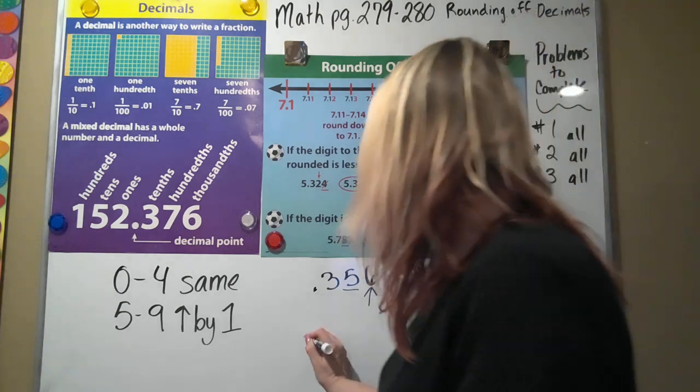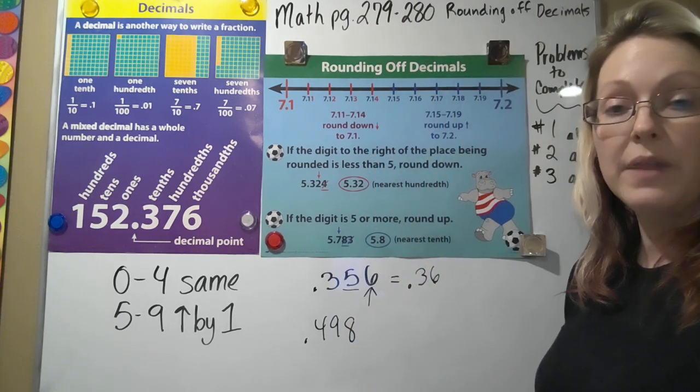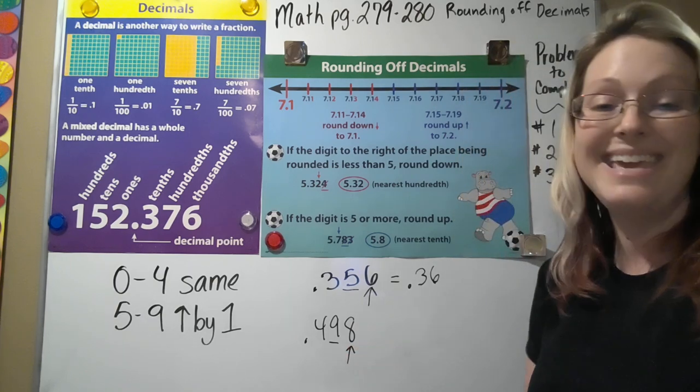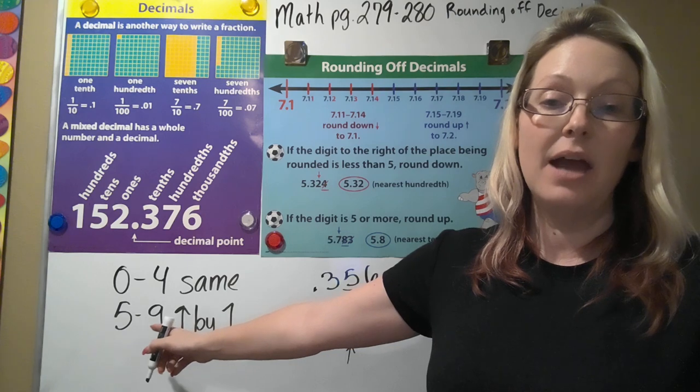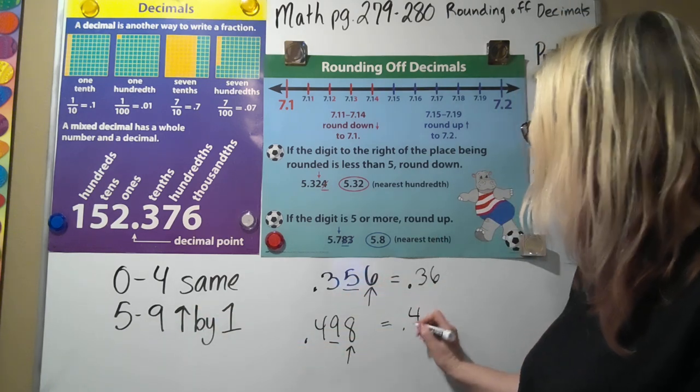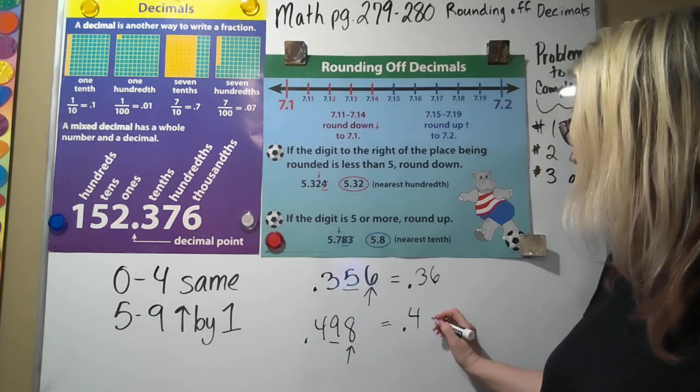Now let's try another one: 0.498, also round to the hundredths. Which one's in the hundredths place? The nine. What's my determining digit? The eight. I take a look: eight's between five and nine, goes up by one. I keep my four, I keep my decimal and my four. I'm rounding the nine.